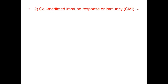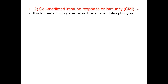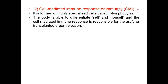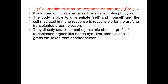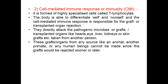Now let us discuss cell-mediated immune response, also called CMI. It is formed of highly specialized cells called T lymphocytes. The body is able to differentiate self and non-self, and CMI is responsible for graft and transplanted organ rejection. T lymphocytes directly attack pathogenic microbes or grafts or transplanted organs like heart, eye, liver, kidney, or skin grafts taken from another person. Grafts or organs from any source — an animal, another primate, or any human — cannot be made permanent since the grafts would be rejected sooner or later.